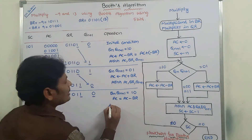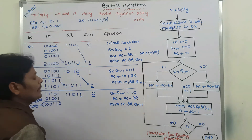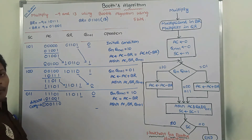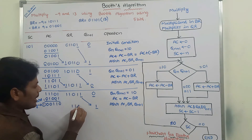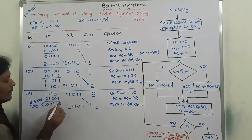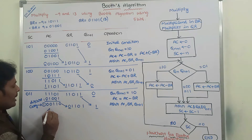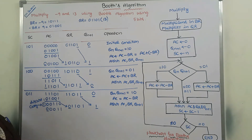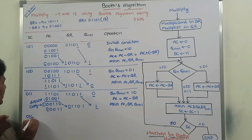After that, we perform arithmetic shift right on AC, QR, and Qn+1. This bit is eliminated, and the remaining bits shift right. QR gets 0, 1, 1, 0. The shifted bit goes into AC, and remaining AC bits shift right giving 0, 0, 1, 1. MSB bit is written again. Sequence counter is decremented from 3 to 2 (binary 010). SC=2 is not equal to 0, so condition is true and control goes back to the decision box.